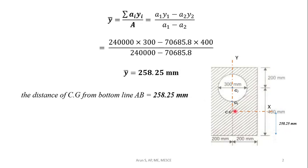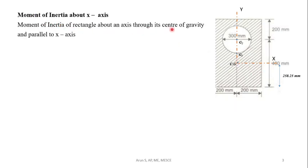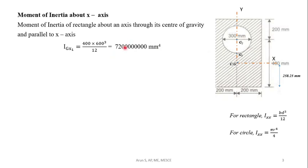The centroid point E is the origin for the centroidal x-axis and y-axis, and we need to find the moment of inertia about these axes. For the moment of inertia about the x-axis: the moment of inertia of the rectangle about an axis through its center of gravity G₁ parallel to the x-axis is IGx₁ = b·d³/12, where base = 400 mm and depth = 600 mm. Substituting gives the value of IGx₁.